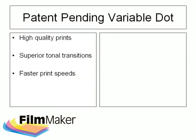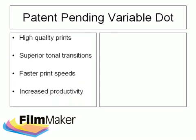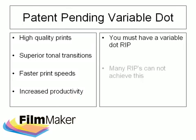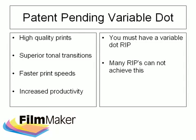What's more, you can also achieve better results at faster speeds. It's only possible to take full advantage of these features by using a variable dot RIP. Now many PostScript interpreters define halftones based on simple one-bit technology, or the on-off method, and this means either a dot is printed or it is not — there is no in between.